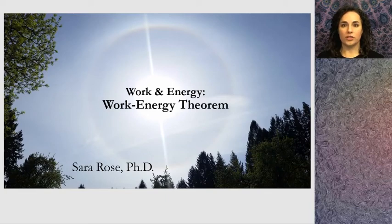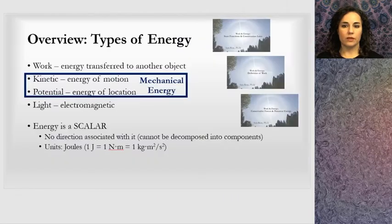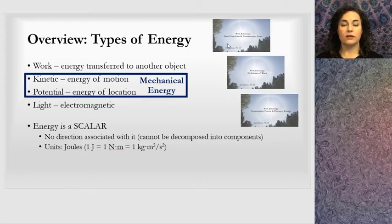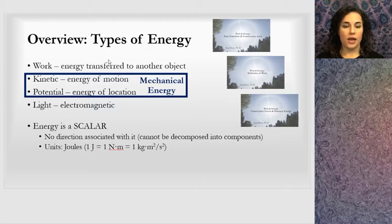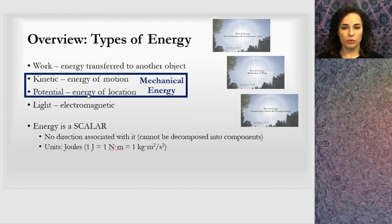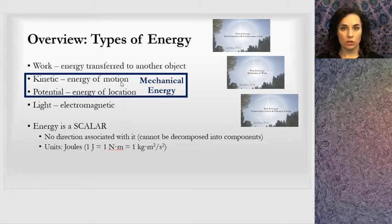This is a lesson on the work-energy theorem in the work and energy unit. As a quick review, I've covered the utility and idea of state functions and conservation laws. We looked at the definition of work in the last lecture and the types of energies. As we move forward, I'm formalizing these ideas more. We're going to look at kinetic energy — energy of motion — during this lecture, and we'll move forward to potential energy.